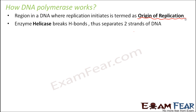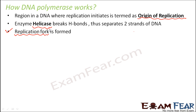Who helps in separating the two strands? The enzyme helicase — it helps by breaking the hydrogen bonds between the bases. The nitrogenous bases, for example adenine and thymine, are connected to each other by two hydrogen bonds. Similarly, cytosine and guanine are connected by three hydrogen bonds. All those hydrogen bonds are broken by the enzyme helicase. When the hydrogen bonds are broken, the two strands separate out, and a structure is formed. Due to its shape, it is known as a replication fork structure.